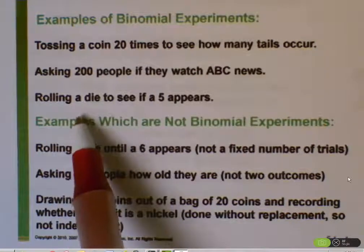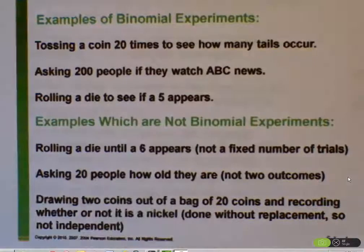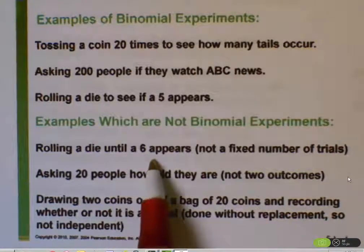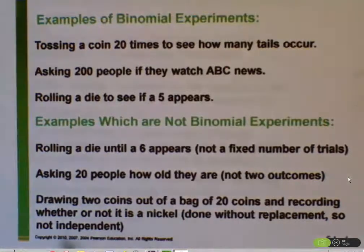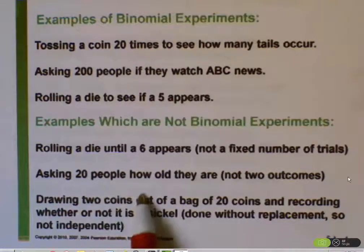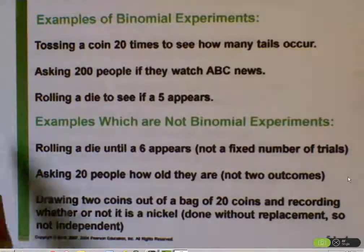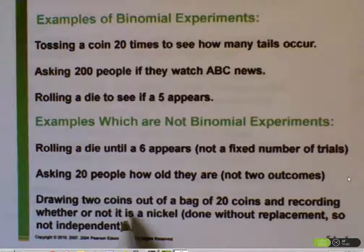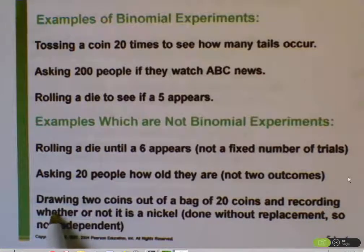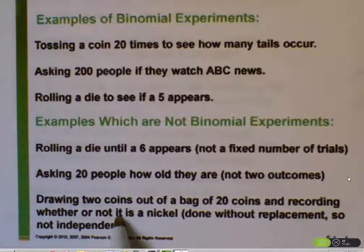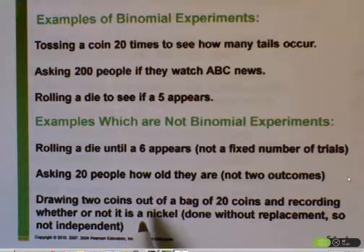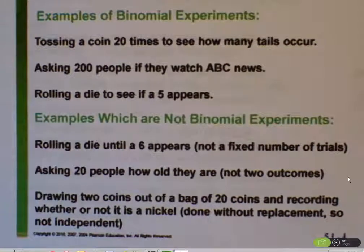Examples which are not binomial experiments: rolling a die until a six appears — we don't know how long that will take, so that's not a fixed number of trials. Asking 20 people how old they are — there are not only two outcomes to that question. Drawing two coins out of a bag of 20 coins and recording whether it's a nickel — if I take one nickel out of the bag, it affects how many nickels are left for the next trial, so the two events are not independent, and that's not a binomial experiment.